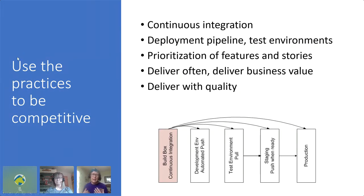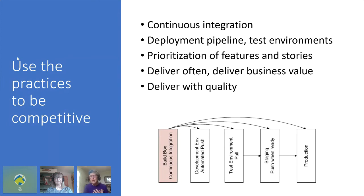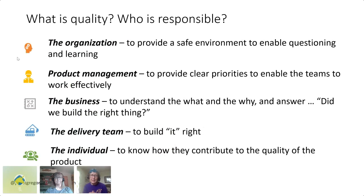Continuous delivery doesn't mean deploying to production every time you have a successful build — you get to choose. Some domains like medical devices need regulatory approval, or some release only quarterly or annually. But your team's goal should be to have a shippable release candidate at any time — if you had to release, you could. That's how you keep technical debt to a minimum and maintain the ability to deliver new functionality and quality attributes in small chunks.